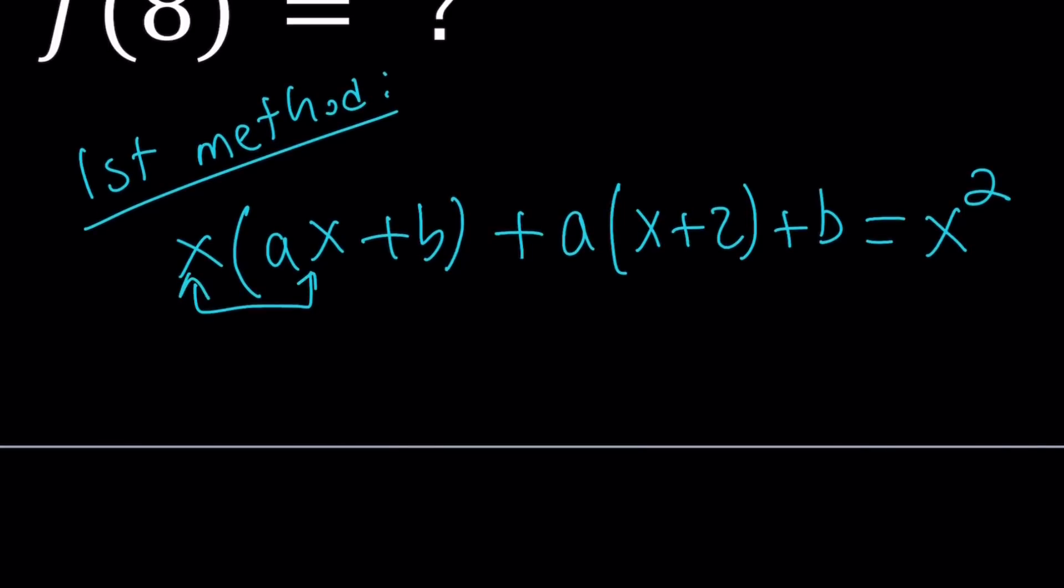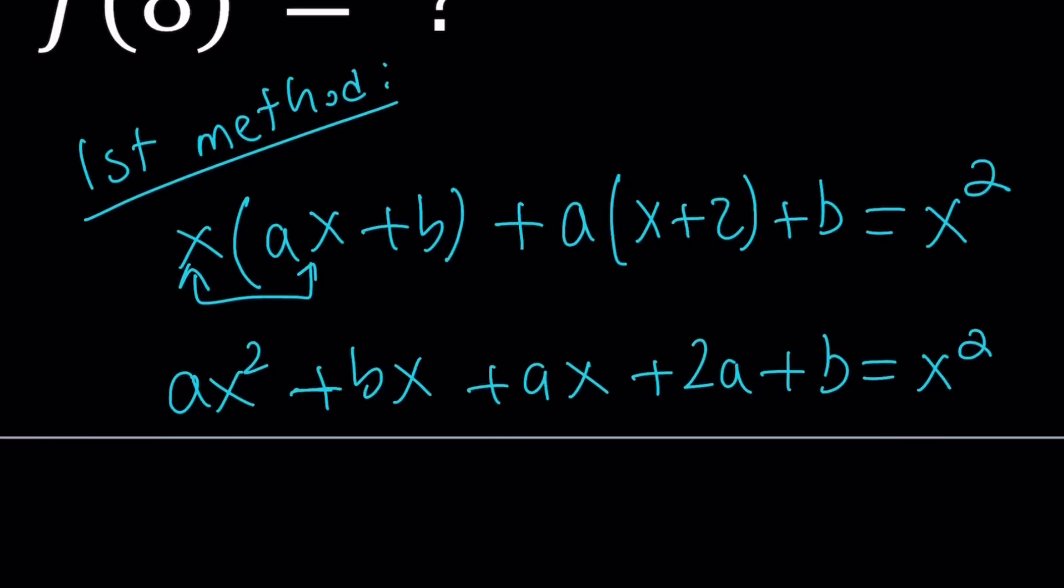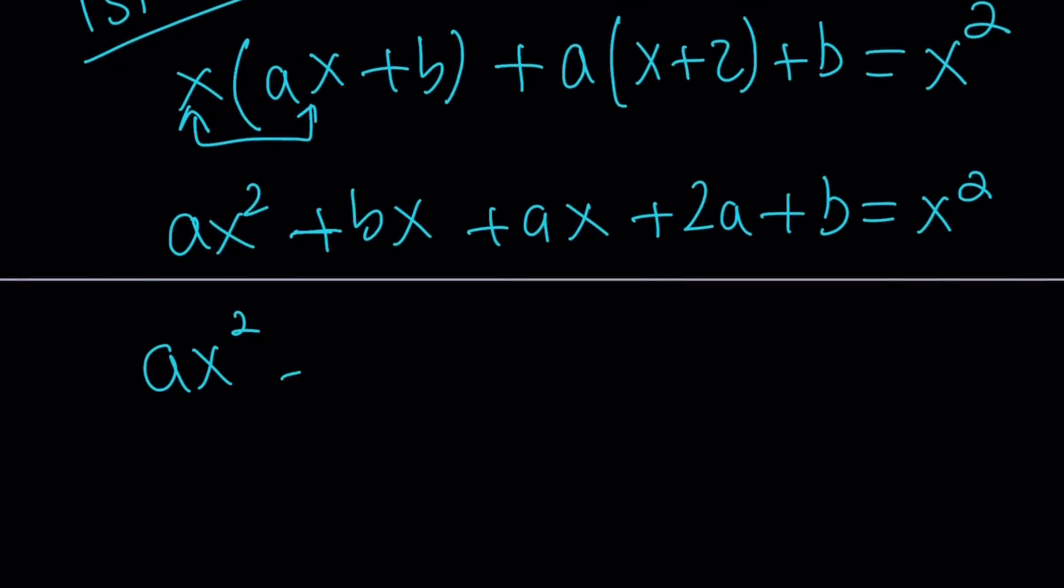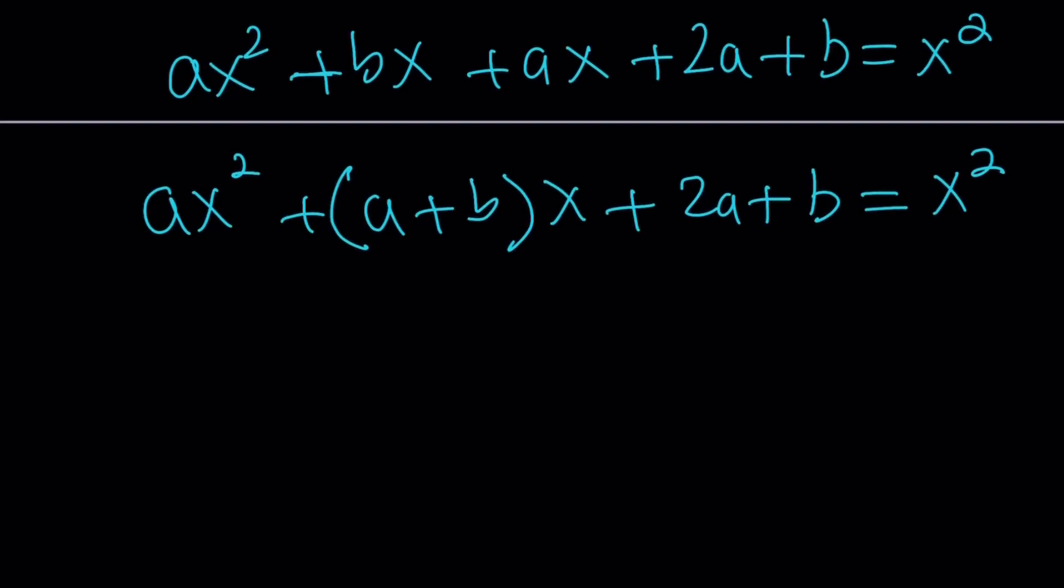We're going to go ahead and distribute. This is going to give us ax squared plus bx plus ax plus 2a plus b equals x squared. Now let's put it together: ax squared plus b plus ax. You could also do alphabetical. I guess that's going to be better for my OCD. a plus b multiplied by x plus 2a or not 2a. Well, it didn't work, 2b. I should have switched them around. Anyways, you get the idea, hopefully.